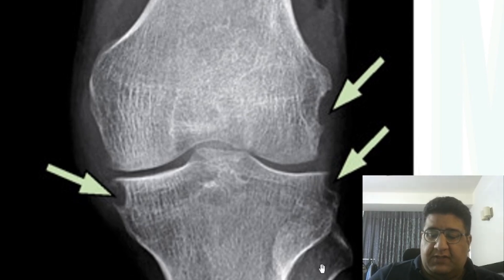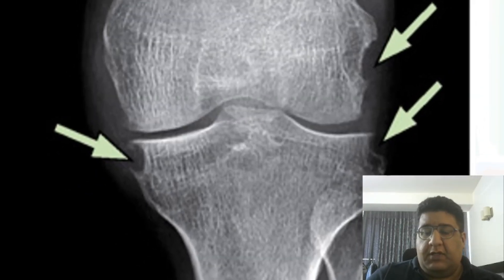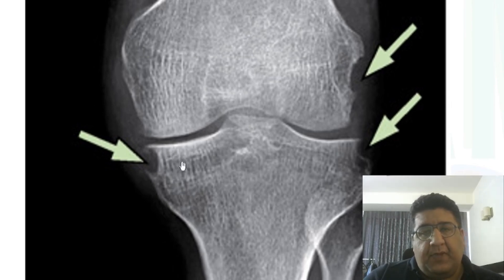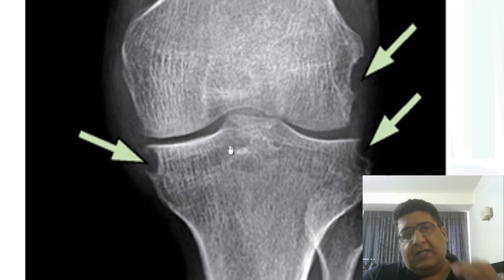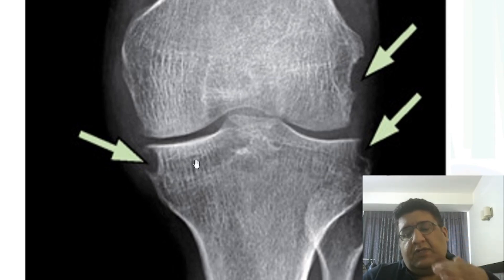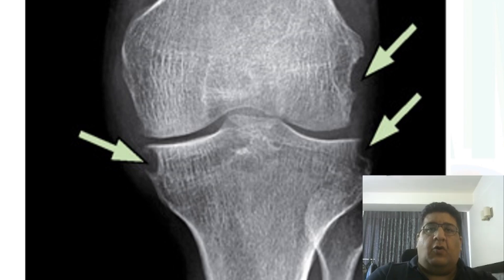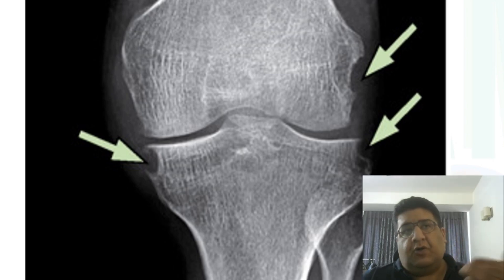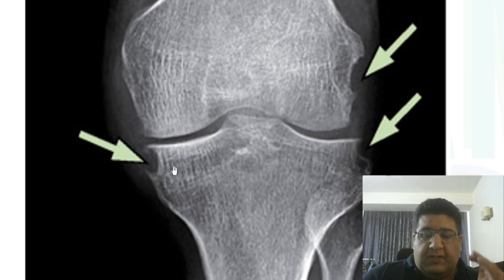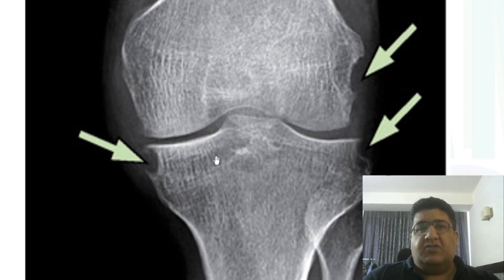You are looking at a knee joint X-ray, AP view. You can see the femur, tibia, and fibula. The first thing I want you to focus on is this area where the overall density of the bone looks slightly less compared to the rest of the bone. When the density of the bone on an X-ray looks low, we call this osteopenia.